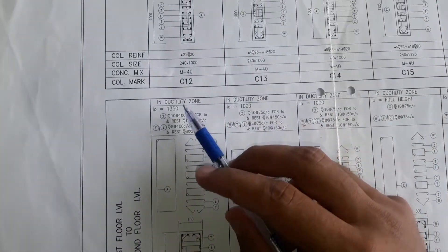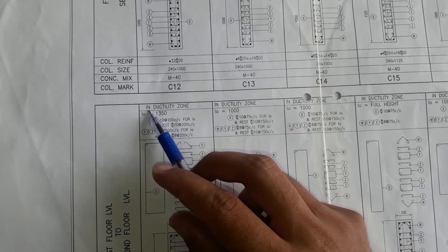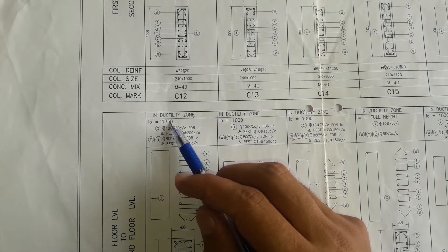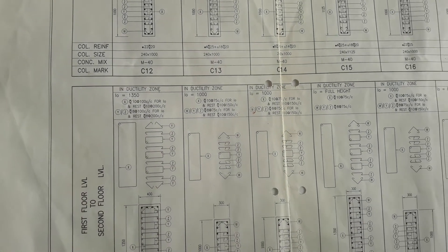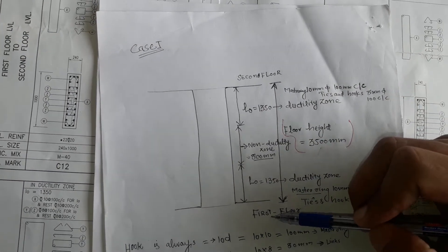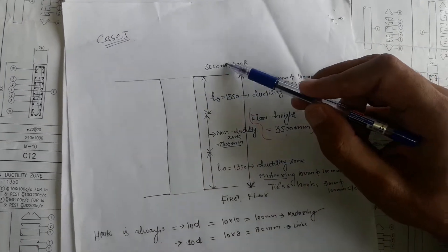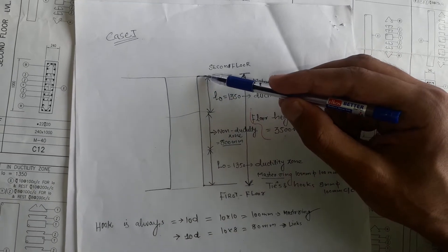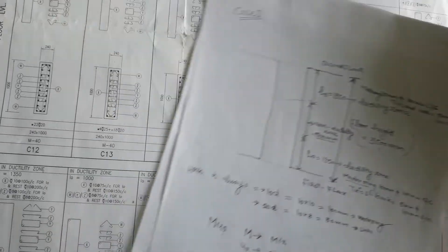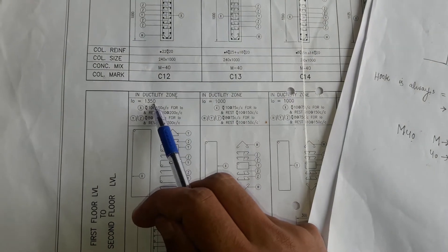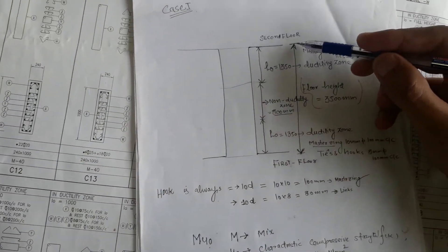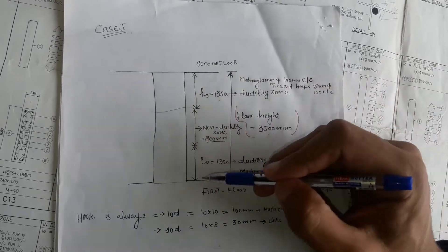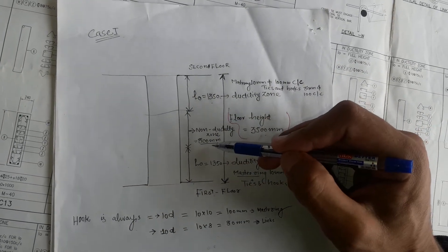The upper part of the drawing shows the ductile zone, where L0 equals 1350 mm. If two floors are connected and the column runs from first floor to second floor, the ductile zone is the zone nearer to the junctions. If the total column length is 3500 mm, the upper 1350 mm and lower 1350 mm are ductile zones.